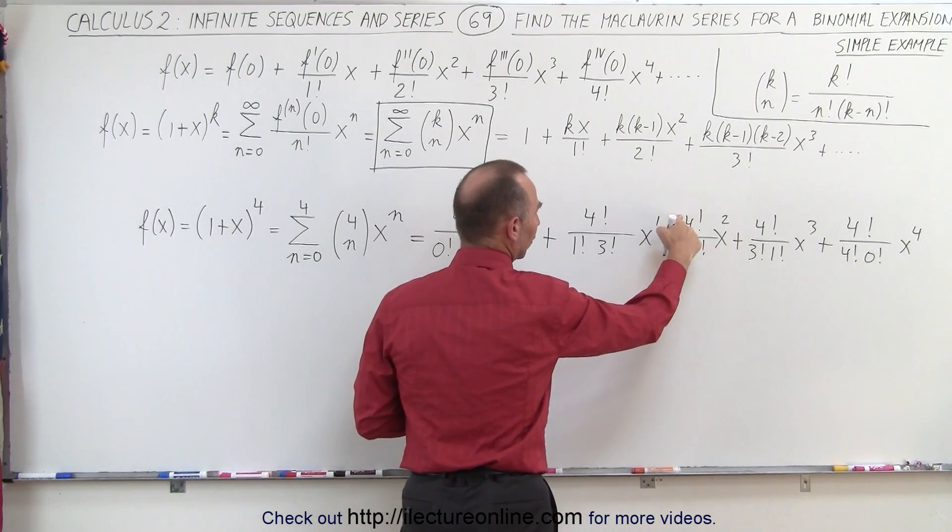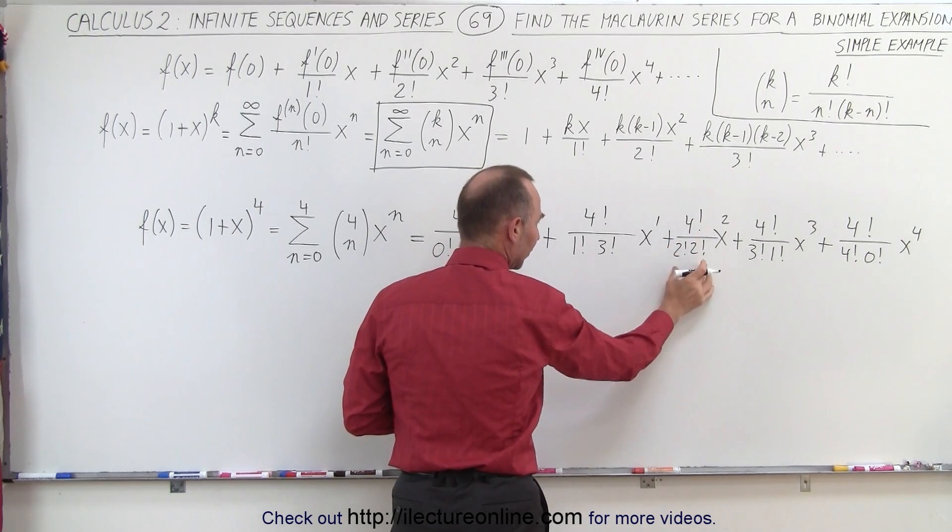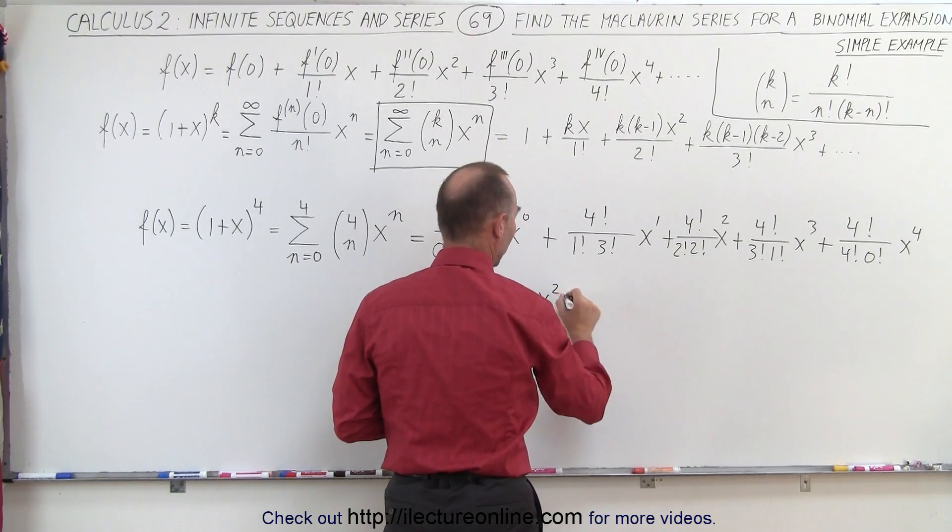Here we get 4 factorial, which is 24, divided by 2 times 2, which is 4, 4 divided by, 24 divided by 4, which is 6x squared, plus.